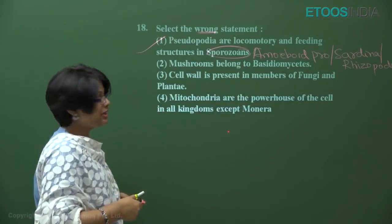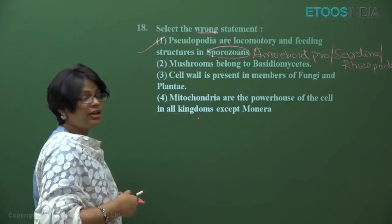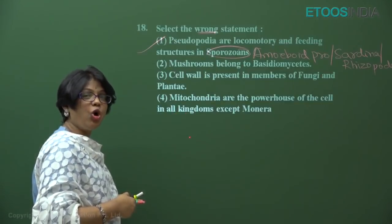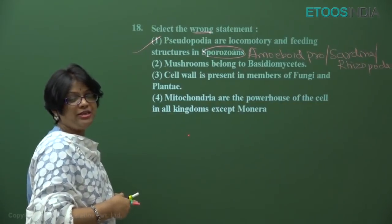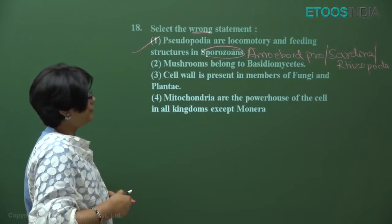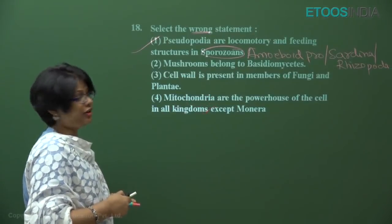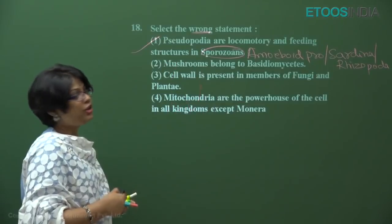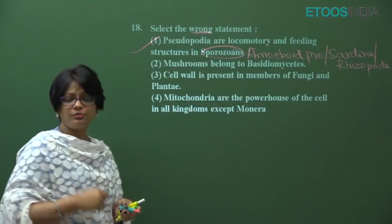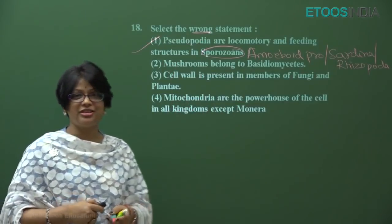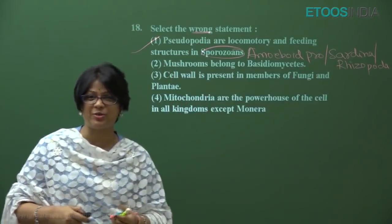Mitochondria are also absent in Monera, but in all other kingdoms — Protista, Fungi, Plantae, and Animalia — which include eukaryotes, they all have mitochondria. So options two, three, and four are absolutely correct. Only option one is wrong, which is the answer. Please note this down. We will solve the next question soon.